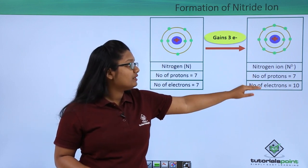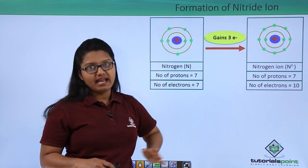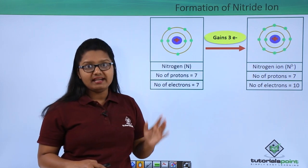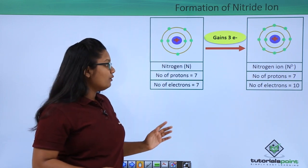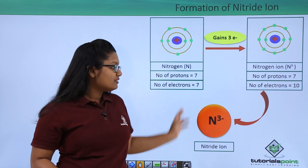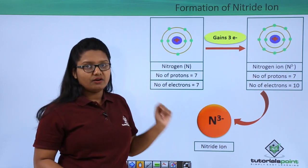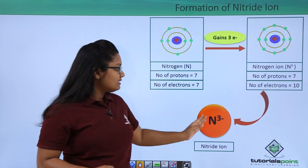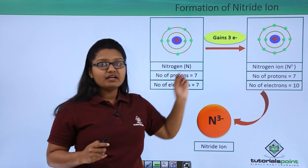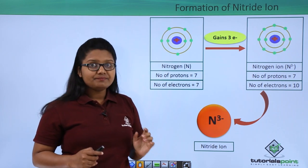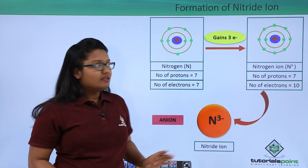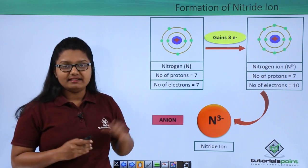After gaining three electrons, the nitrogen atom has seven protons and ten electrons, leaving three extra electrons. These three extra electrons give the nitrogen atom a charge of minus three, so it becomes N³⁻. This form of the nitrogen atom is called the nitride ion — a negative ion, and thus an anion.